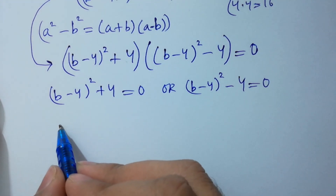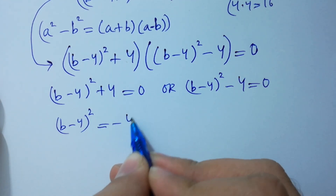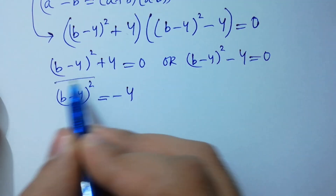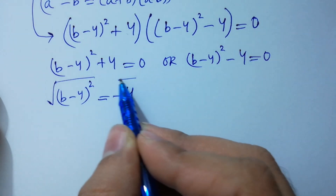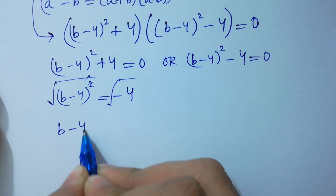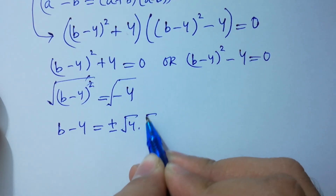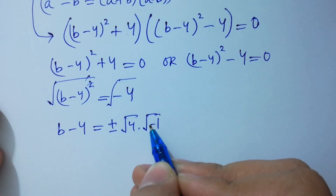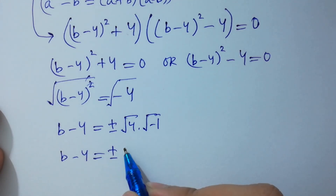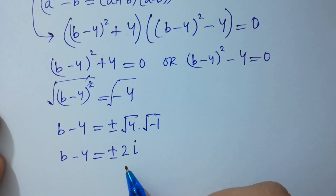From the first factor: (b-4)² = -4. Taking the square root on both sides, b-4 equals plus or minus the square root of 4 times the square root of -1. So b-4 equals ±2i, since the square root of -1 is i from complex numbers.